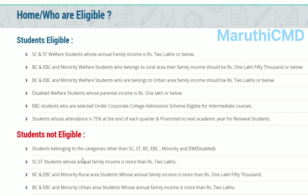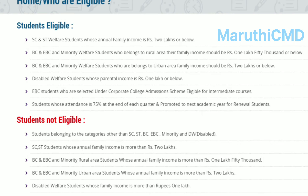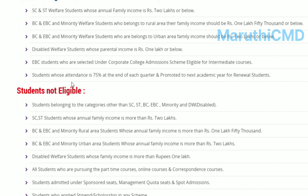Who are eligible students? BC and EBC and minority welfare people in rural areas — 1,500,000 people in rural areas. BC and EBC and minority welfare students who belong to urban area families — urban area family income more than 2,000,000. Disabled welfare students — 1,000,000. EBC students selected under Corporate College Admission Scheme are eligible for Intermediate course. Students who have attendance of 75% at the end of the quarter or semester.